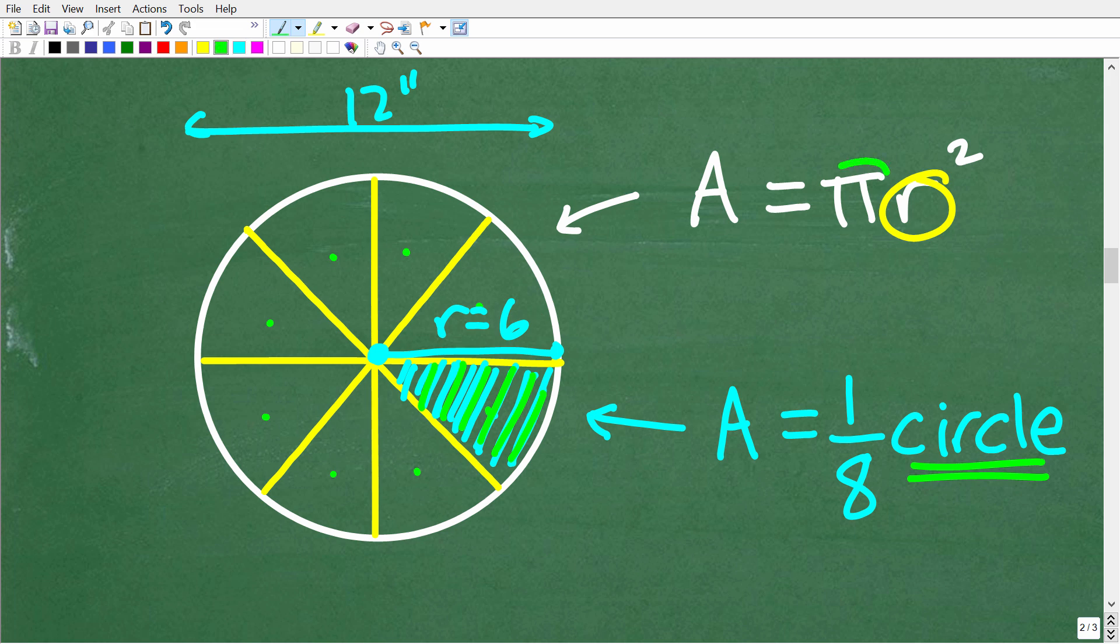Now what about this symbol right here? Well that is pi and pi is approximately equal to the decimal 3.14. Now pi is one of the most important numbers or values in mathematics but the interesting thing about pi is that it is a decimal that doesn't repeat and doesn't terminate. In other words the digits of pi are just kind of random and they go on and on to infinity.